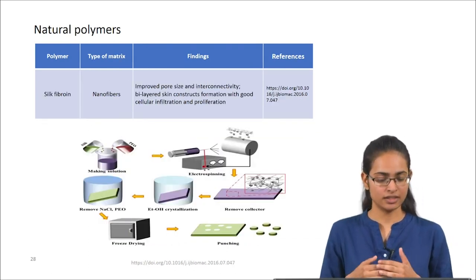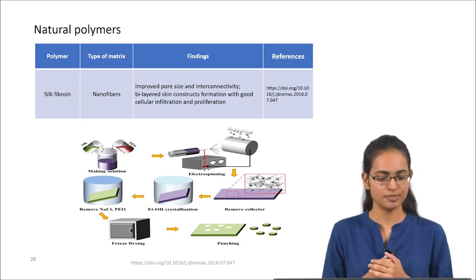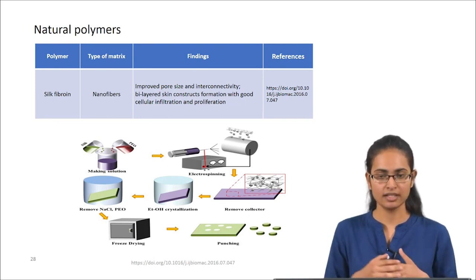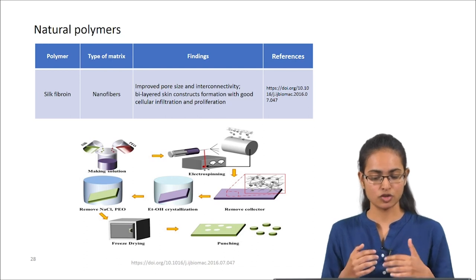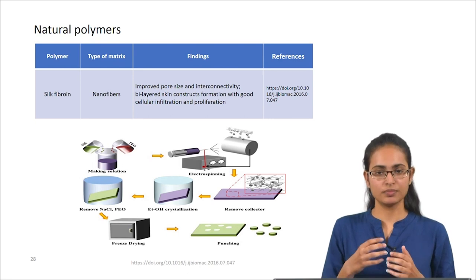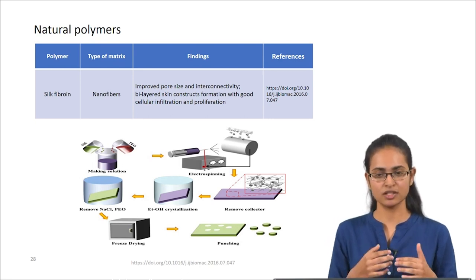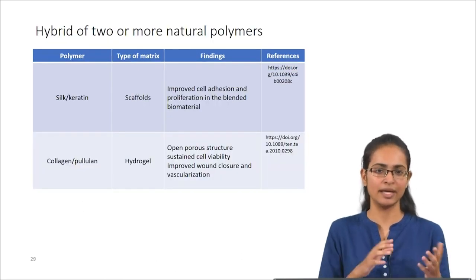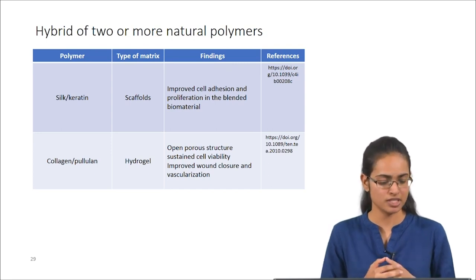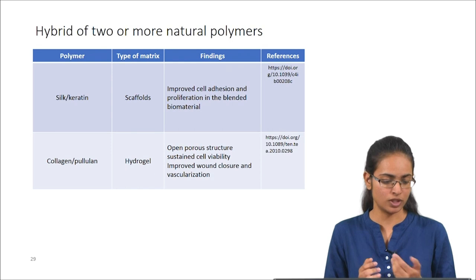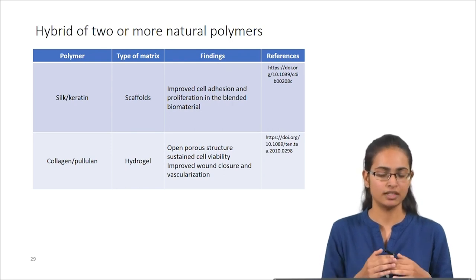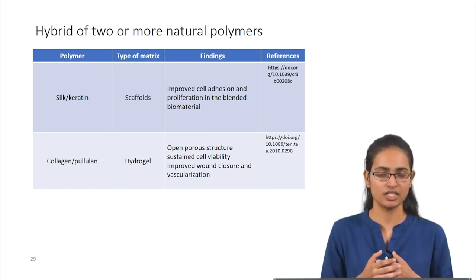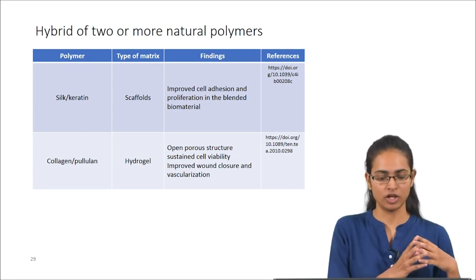Silk fibroin is another natural polymer that has been processed into nanofibers using electrospinning. Electrospun silk fibroin has shown improved pore size and interconnectivity, which helps in good cellular infiltration and proliferation. Hybrids of two or more natural polymers have also been used, such as silk-keratin scaffolds, where the keratin component — which contains RGD sequences — helps in improved cellular adhesion and proliferation compared to silk fibroin scaffolds alone, showing superior properties.